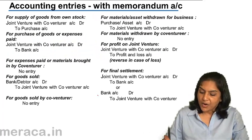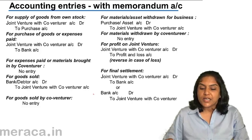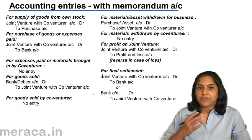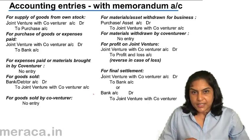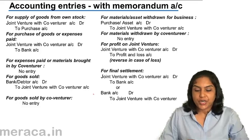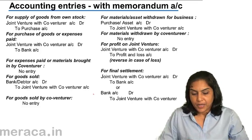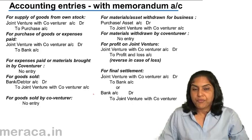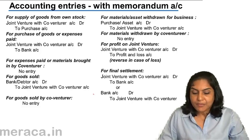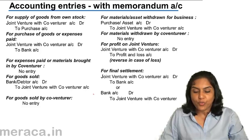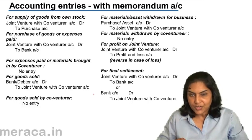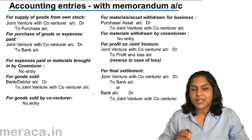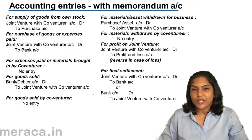For accounting entries in the books of Akash: when goods are supplied from own stock, the entry is joint venture with co-venturer account debit to purchases. If goods are purchased or expenses are met and money is spent, then it's joint venture with co-venturer account debit to bank. For any expenses which Akash incurs, the method is to debit joint venture with co-venturer account.